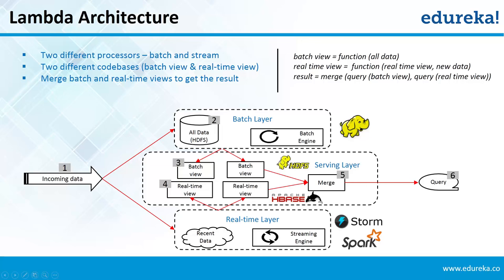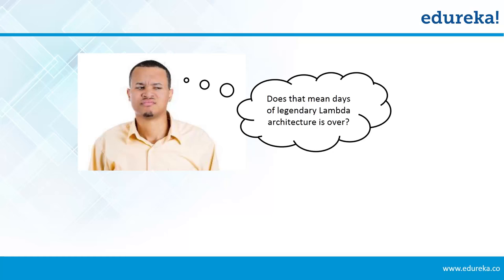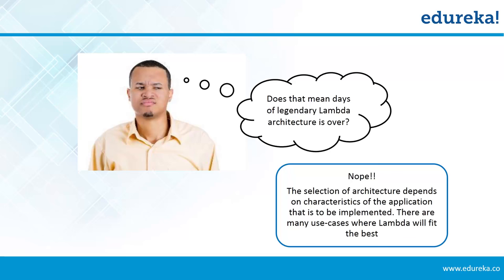The batch process takes time to run and produce batch views. During this period, additional incoming data is not included in the process. To account for this, a parallel speed layer computes incremental real-time views on recent data. To serve a query, the serving layer needs to merge results from both the batch view and the real-time view. Merging results from different storage structures takes time, so true real-time processing can never be achieved using this architecture. The selection of architecture depends on the characteristics of the application — lambda architecture still fits many use cases.